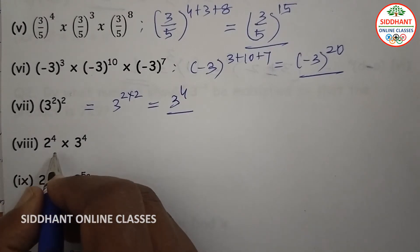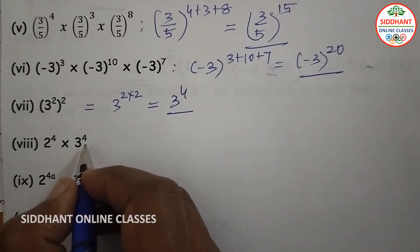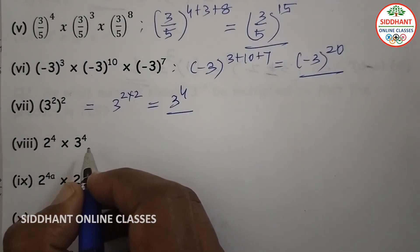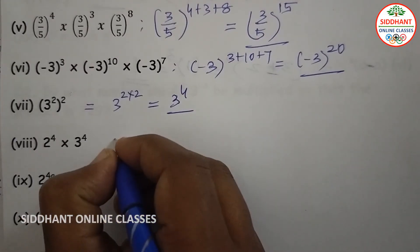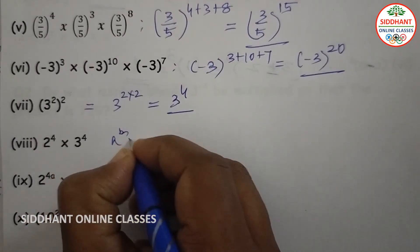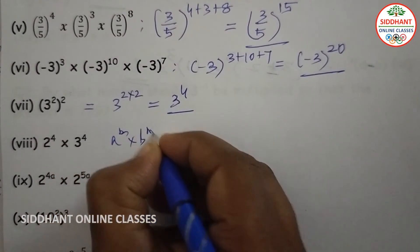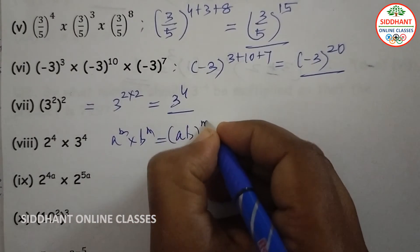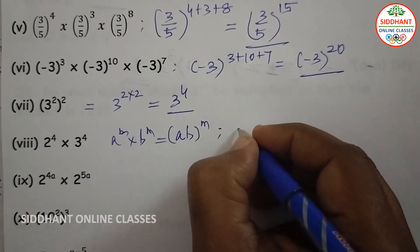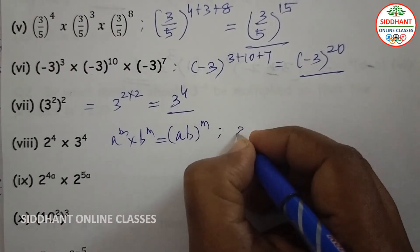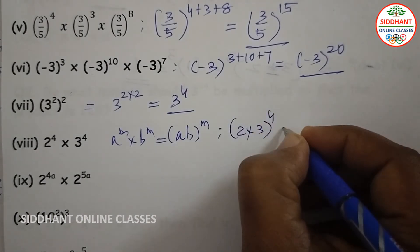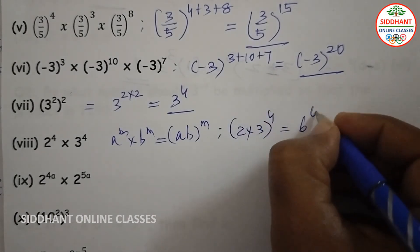Eighth one: 2 to the power of 4 into 3 to the power of 4. Here powers are same but bases are different. We use a to the power of m into b to the power of m equals (a times b) to the power of m. That means 2 times 3 to the power of 4, which gives 6 to the power of 4.